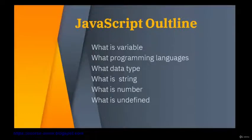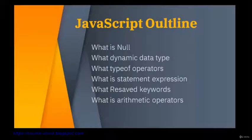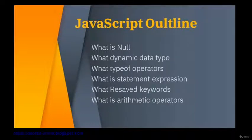You will learn these in detail in the course. What is null? What are dynamic types? JavaScript is called a dynamic data type language, meaning the data you define in your program — like a number — can be updated to a character, true, false, or null. These are called JavaScript dynamic data types.